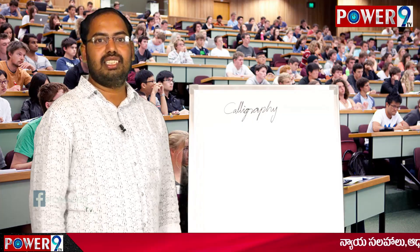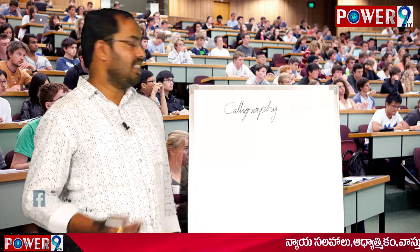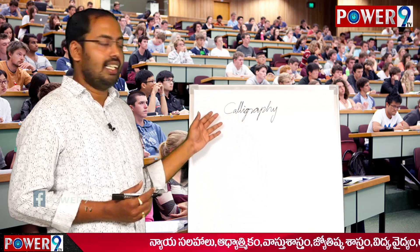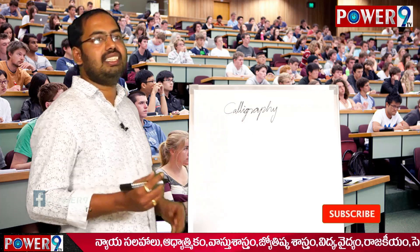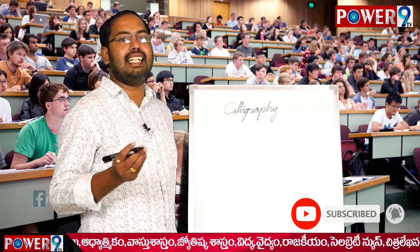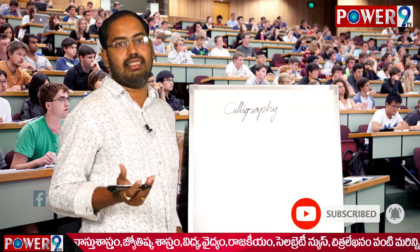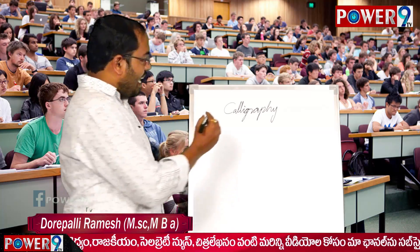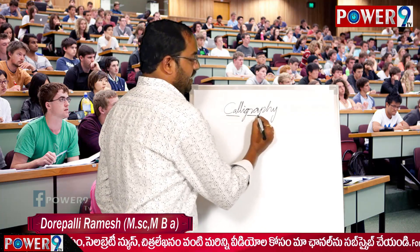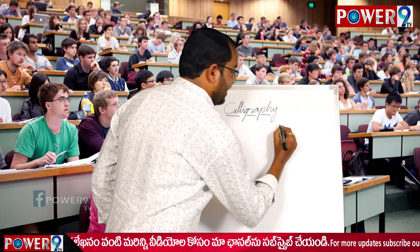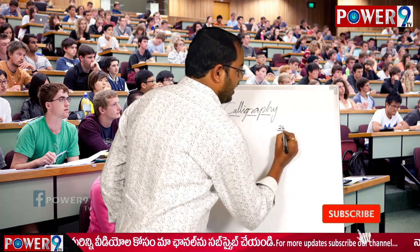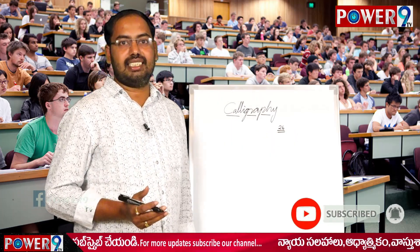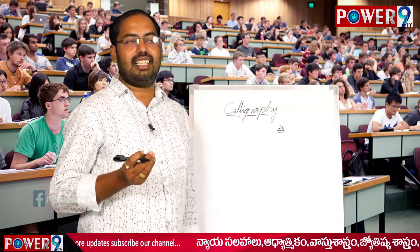Welcome to Power Nine TV. Today I am discussing handwriting skills, which we can simply call calligraphy. Calligraphy is about learning how to write English in a better manner in our paper presentation. We are discussing only 26 letters — A, B, C, D, and so on — but everybody writes them differently.